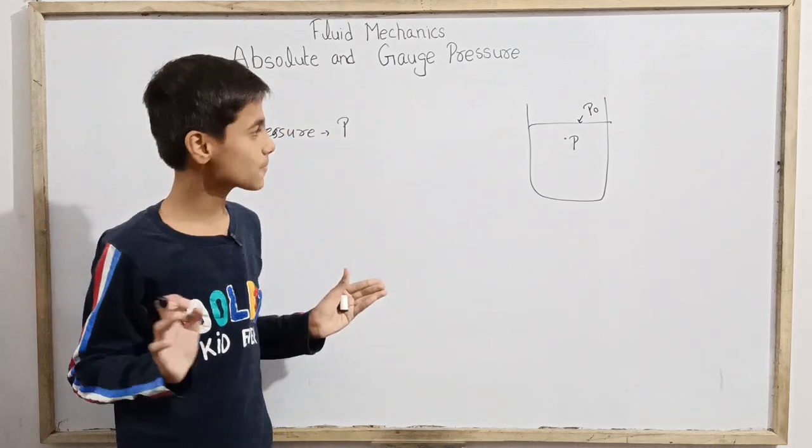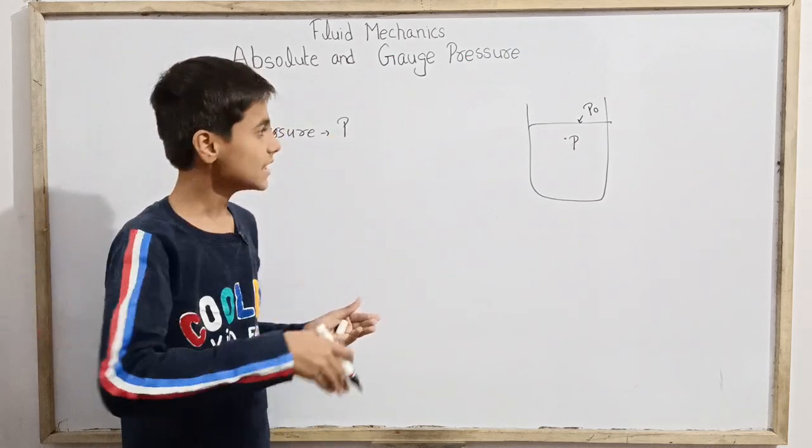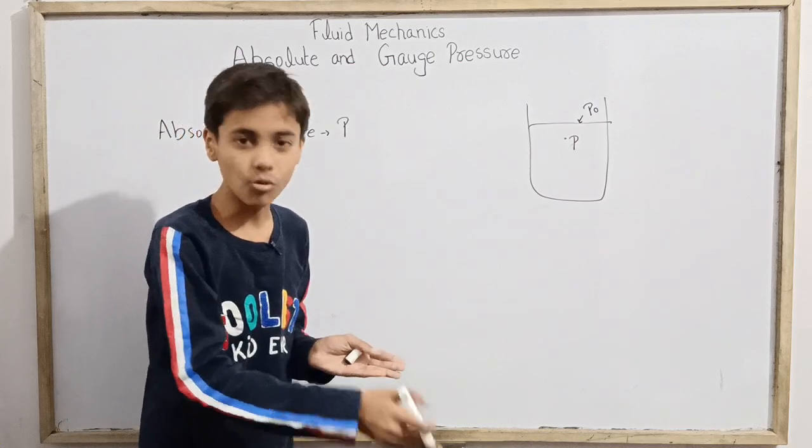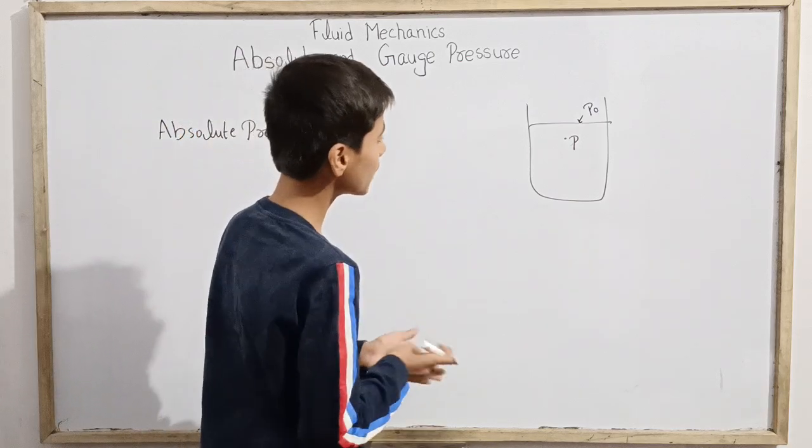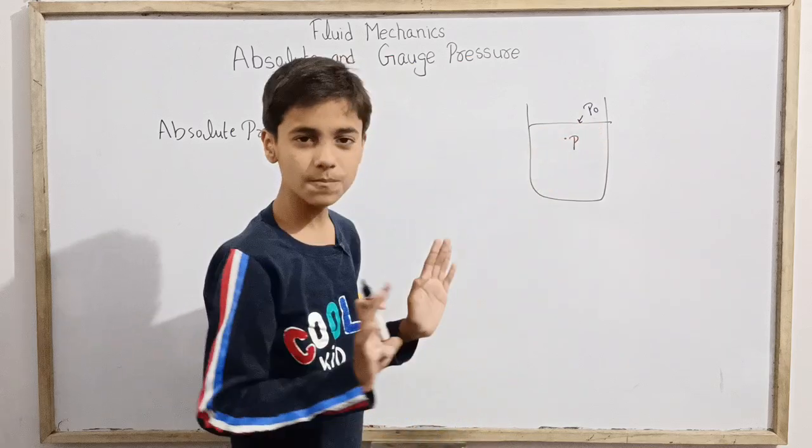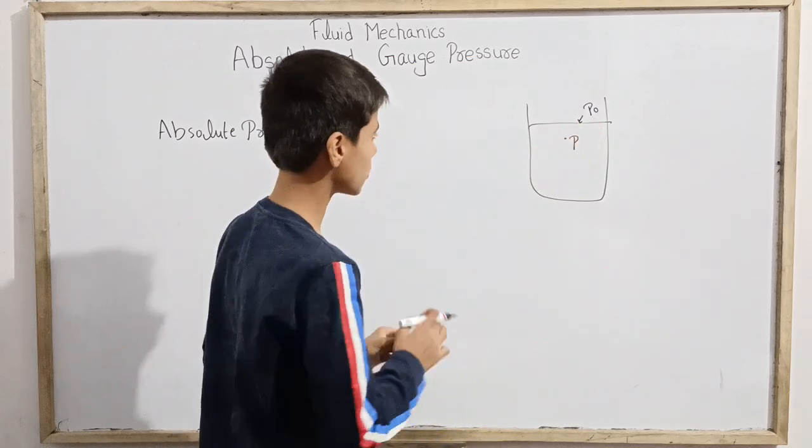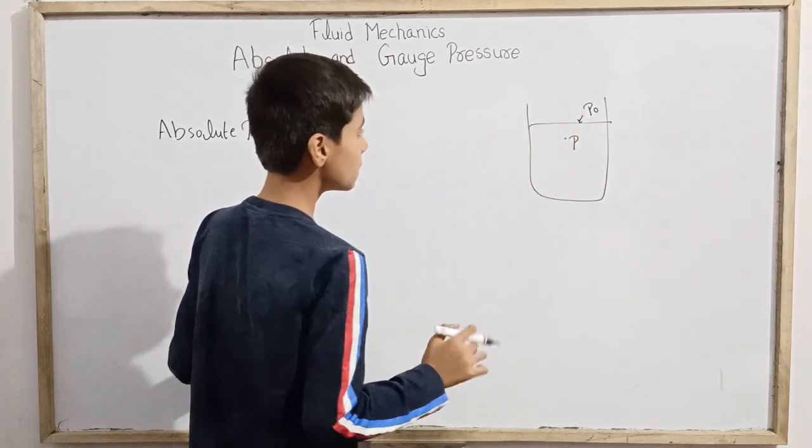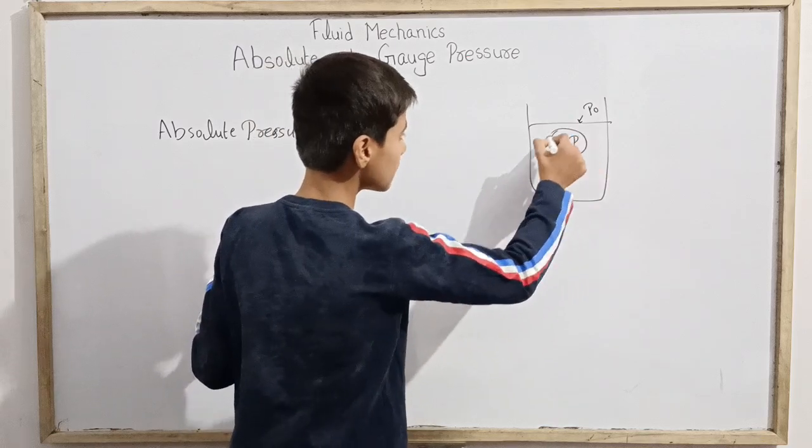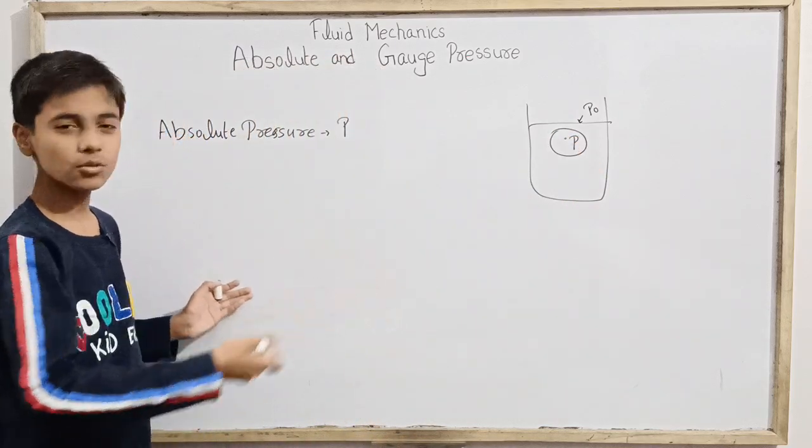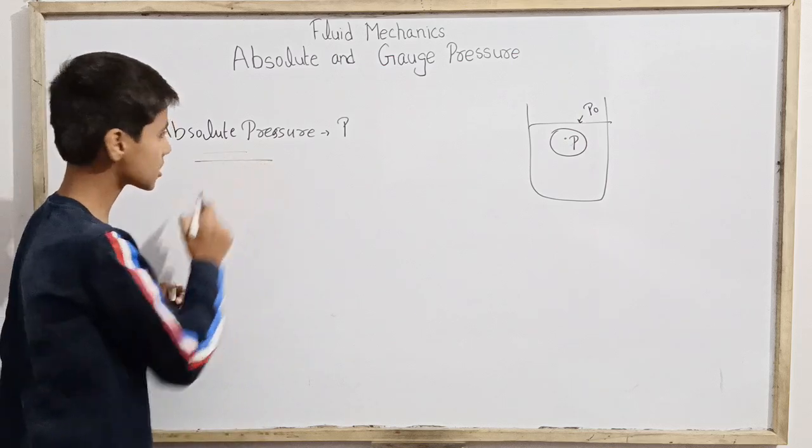But at sea level - suppose we climb on Mount Everest or we go down a hole in the earth, we are mining - so the pressure P0 will differ from one atmosphere. So let's leave it up to P0. So the exact total pressure at certain point, dF normal over dA, we call it absolute pressure.